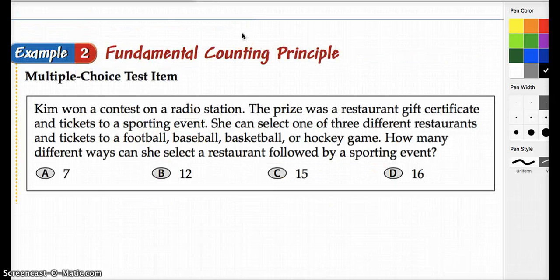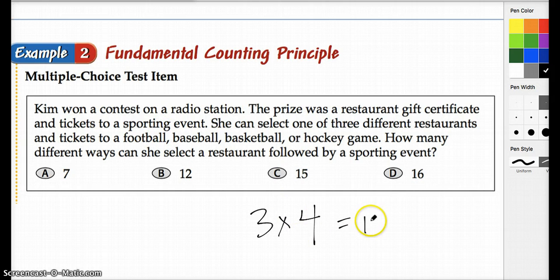So this next example two is very similar to example one where we're looking at somebody who has some choices to make. Kim won a contest on a radio station. The prize was a restaurant gift certificate and tickets to a sporting event. She can select from one of three different restaurants and tickets to one of four: football, basketball, baseball, or hockey. How many different ways can she select a restaurant followed by a sporting event? And so that would be three different restaurants times four different sports events, which gives us 12.